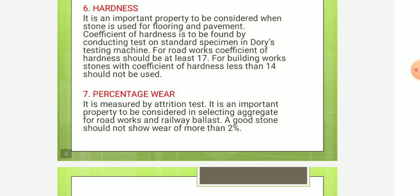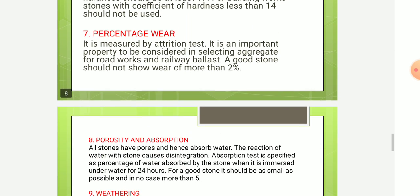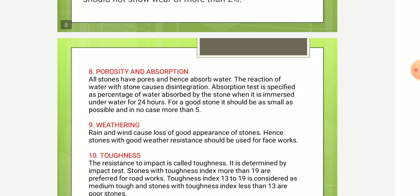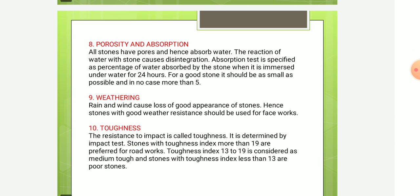Next is wear, measured by the attrition test. It is an important property to be considered in selecting aggregate for road work and railway ballast. A good stone should not show wear of more than 2%.